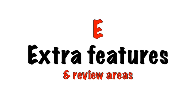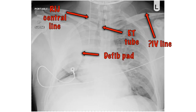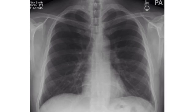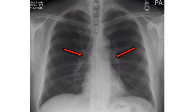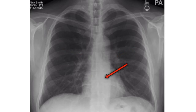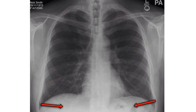E. Extra features and review areas. Look for evidence of medical intervention, for example monitoring equipment, lines and tubes. Are they correctly positioned? If the chest X-ray appears normal so far, pay attention to the review areas: the lung apices, the hilar regions — these are made up of the bronchi and major pulmonary vessels. The left hilum is higher than the right or at the same level; they should be symmetrical in size and density. Look behind the heart. Check the soft tissues. Finally, review under the diaphragm.